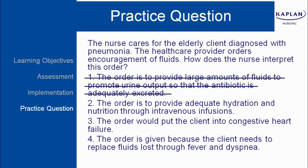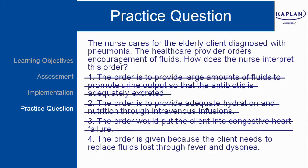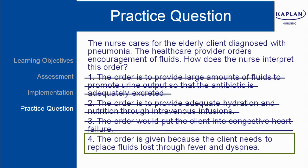Number one is incorrect — the question does not indicate which antibiotic has been ordered for this client; do not make the mistake of reading information into the question. Number two is incorrect — the question does not indicate anything about other orders, so it cannot be assumed the client will receive adequate hydration and nutrition parenterally. Regarding number three, although the nurse would monitor an elderly client for signs of CHF, the need for fluids must be addressed. So four is the correct answer: the order is given because the client needs to replace fluids lost through fever and dyspnea.